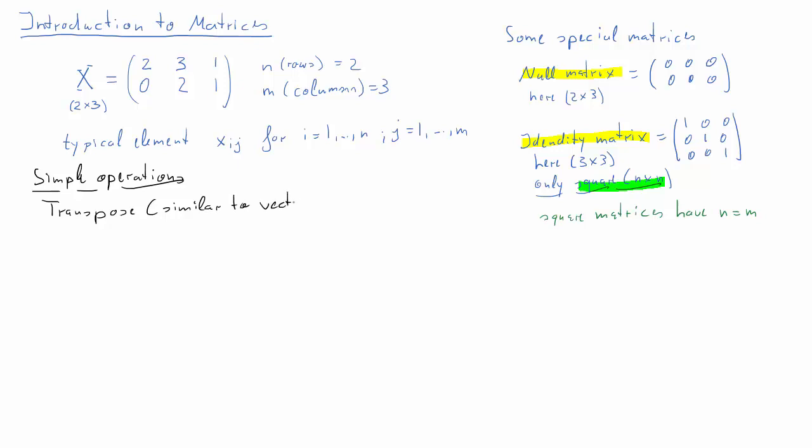The first operation is the transpose operation, which is very similar to what transposes do to vectors, and after all vectors are just special cases of matrices. Let's imagine that X is a 2 by 3 matrix, for instance this one. Then X transpose, sometimes called X dash, will actually be a 3 by 2 matrix, so the row and column dimensions have just changed.